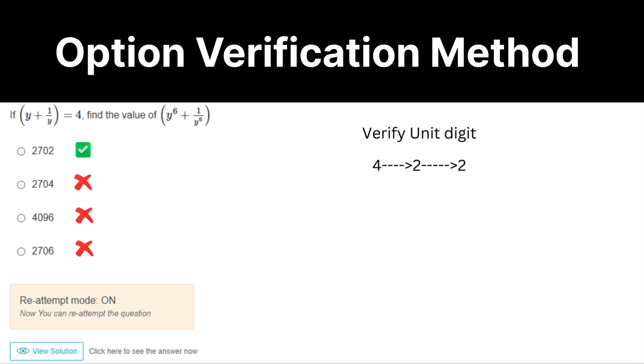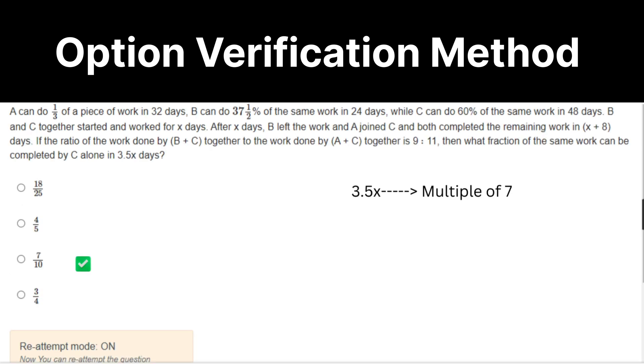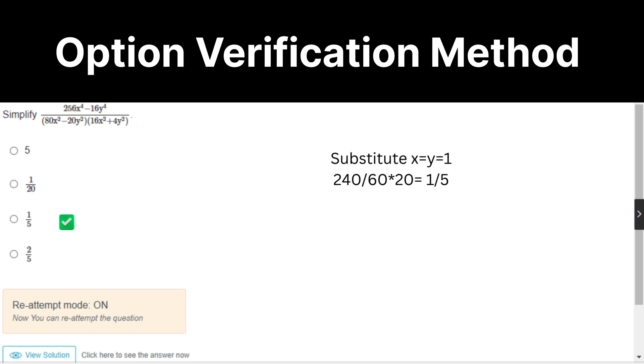Next question: What is the volume of cylinder? Verify the 11 multiple. Then, what fraction of the same work can be completed by C alone in 3.5x days? So whatever you solve here, you need to multiply it with 3.5, which means answer should be a multiple of 7. If you want to take chances, you can directly mark it as 7 by 10. Here, substitute x equal to y equal to 1.